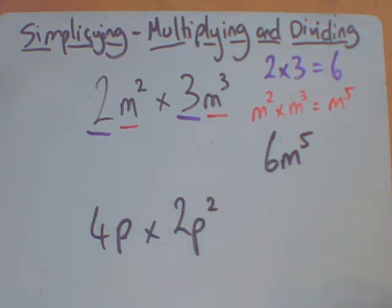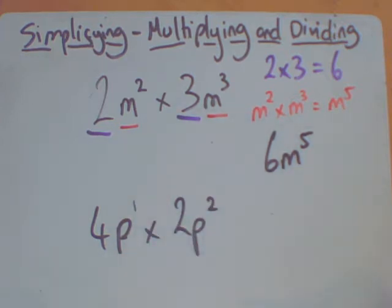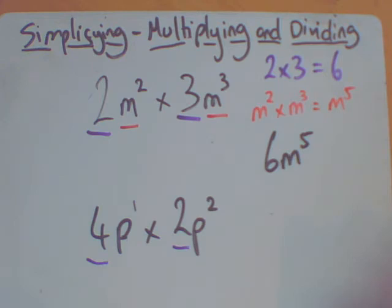Now the first thing a lot of students do is they say there's no indices. There is, because this one is actually p to the power 1. Remember, don't write the 1 down. I'm going to treat it exactly the same. So I've got my numbers to do first. So I've got 4 multiplied by 2, do not add them, which gives me 8.